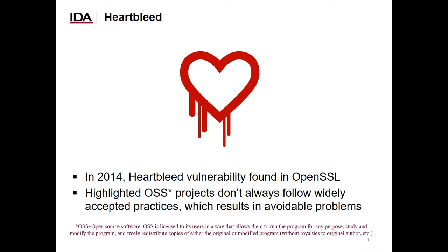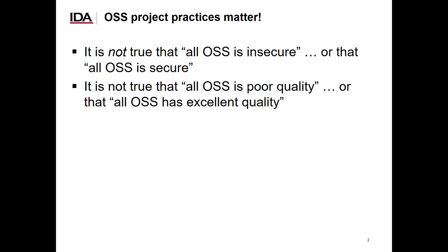Defects, including vulnerabilities, can happen to any project, but avoidable problems are something else. In short, the practices used by an open source software project affect its users. It's not true that all open source software is insecure, or that all open source software is secure. Similarly, it's not true that all open source software is of poor quality, or that it all has excellent quality. Instead, open source software tends to be more secure and higher quality if the project follows good practices.